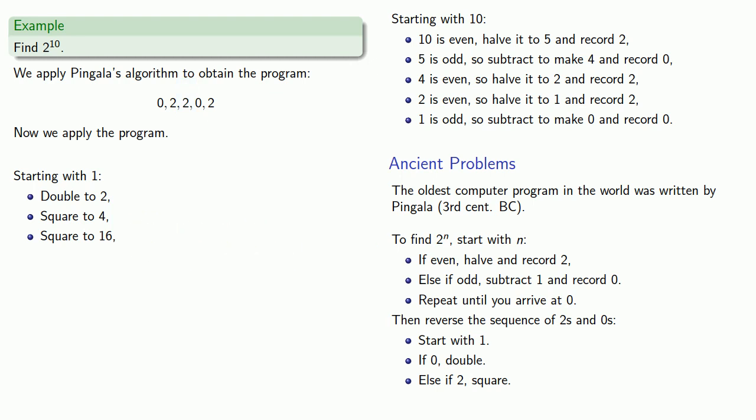The next instruction is 0, so we'll double to get 32. And our last instruction is a 2, which says we'll square our number to 1024, which is going to be our answer of 2 to the 10th.